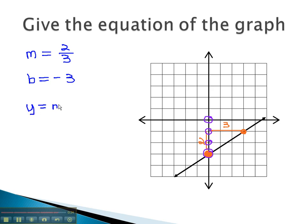Using y equals mx plus b, we can simply plug in the information we know. y is equal to m, the slope of this line is 2 thirds, x plus b, or negative 3. This then is the equation that if you were to draw a picture of the solutions, you would get the line we started with.